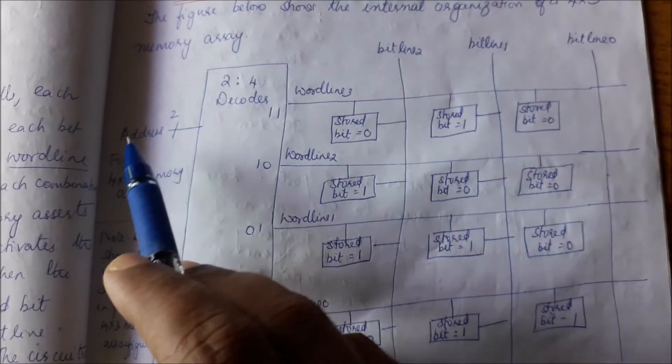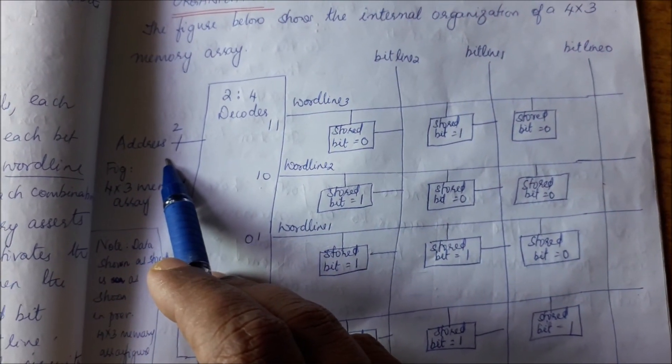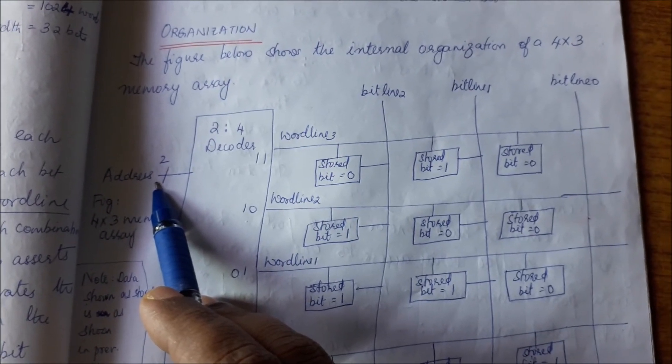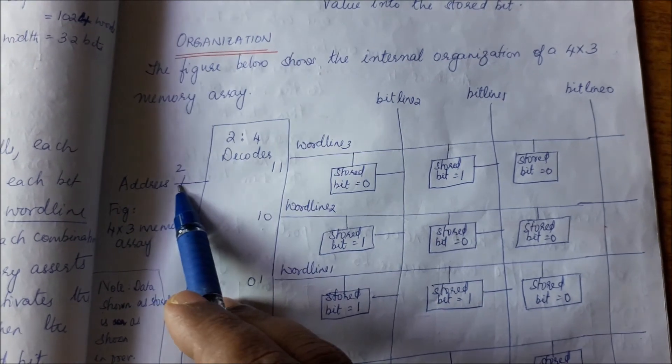So what you are going to give? You are giving an address here, and that address is, let us say for a change, the address is 1, 1. So the 2 is to 4 decoder, if I give 1, 1,